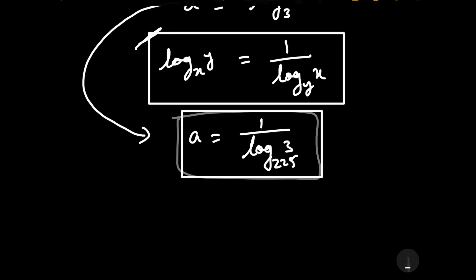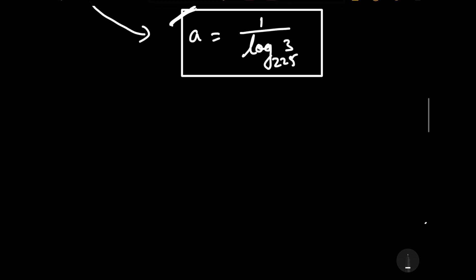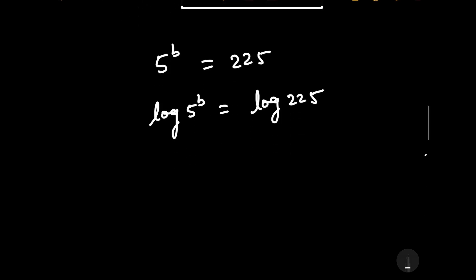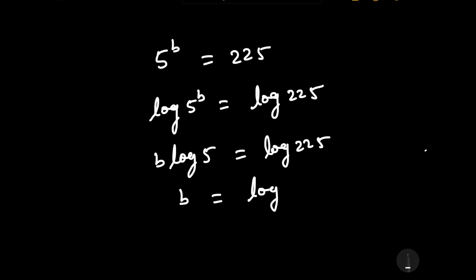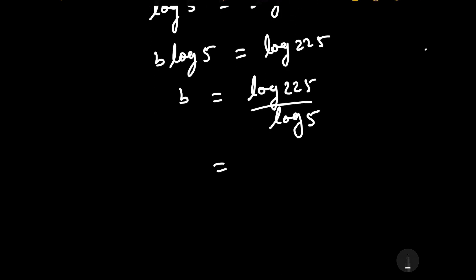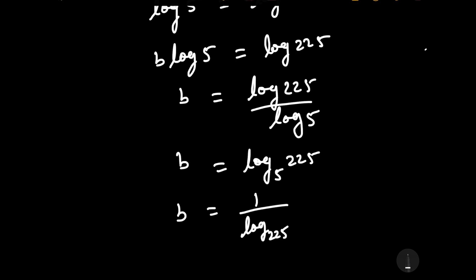In a similar fashion we can find the value of B. It is given that 5 to the power B is equal to 225. Taking log both sides: B log 5 is equal to log 225, so B is equal to log 225 by log 5. Therefore B is equal to log base 5 of 225, which can be written as B is equal to 1 upon log base 225 of 5.